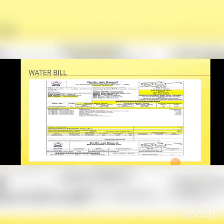Now you can see a bill in front of you — this is a water bill. It is basically issued by the Delhi Jal Board. Every state has its own Jal Board that regulates the supply of water. You can see on the bill that there is the name of the customer, address, mobile number for contacting, consumer category, the date on which the bill was issued, the due date, and the amount of the bill.